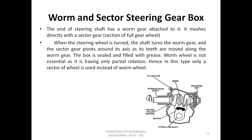Worm and sector steering gear: The end of the steering shaft has a worm gear attached to it, which meshes directly with the sector gear — a section of a full gear wheel. When the steering wheel is turned, the shaft turns with the worm gear and the sector gear pivots around its axis as its teeth are meshed along the worm gear. The box is sealed and filled with grease. Since the worm wheel requires only partial rotation, only a sector of the wheel is used instead of a full worm wheel. The worm and sector are based on the principle of transmitting motion from the steering tube to the pitman arm.